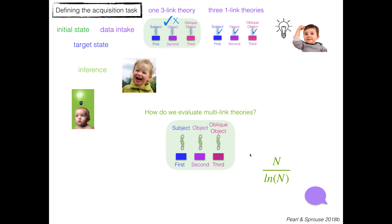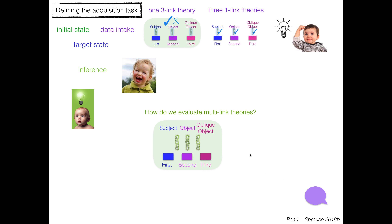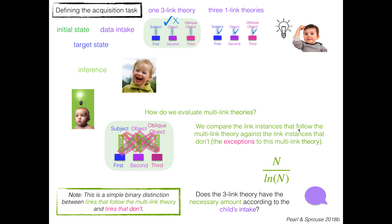To evaluate multi-link theories, the idea is very similar. We compare the link instances that follow the multi-link theory against the link instances that don't — the exceptions — and we need the exceptions to be fewer than the tolerance threshold. This is a simple binary distinction between the links that follow and the links that don't. If the three-link theory has fewer exceptions than the threshold, that is a reliable multi-link theory.